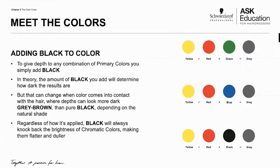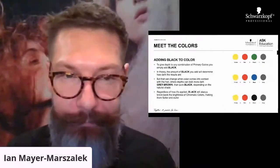That also changes when it comes into contact with hair color, where sometimes darker shades could look more dark, like a gray brown, rather than a pure black — and it just depends on what their natural level is. So regardless of how you use black, it will always basically knock back or take away from the brightness of any chromatic color and make them look a little bit flatter or duller.